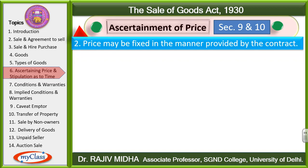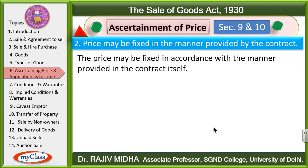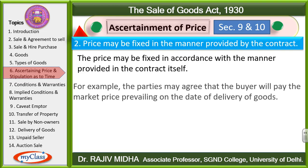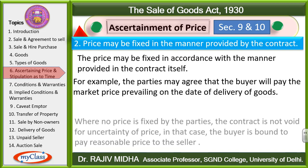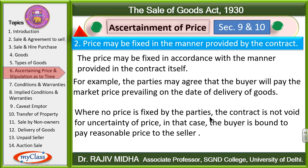Price may be fixed in the manner provided by the contract itself. For example, the parties may agree that the buyer will pay the market price prevailing on the date of delivery of the goods. Even if the price is not fixed by the parties, the contract is not void for uncertainty of price. In that case, the buyer is bound to pay a reasonable price to the seller.